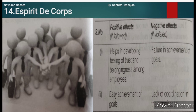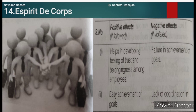Principle 14: Esprit de Corps. It means team spirit and teamwork. Fayol suggested that the organization should be considered as a team and all employees as its members. This helps to develop a feeling of belongingness among them, and thus each of them contributes to the achievement of organizational goals. For this, managers should replace 'I' with 'we.' Positive effects: develops feelings of trust and belongingness among employees, and easy achievement of goals. If violated: failure in achievement of goals and lack of coordination in the organization. Thank you for watching this video.